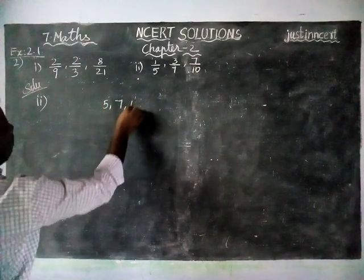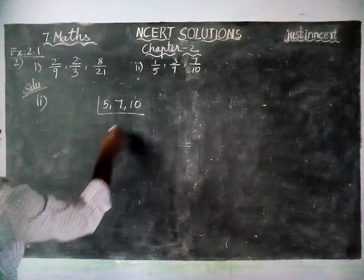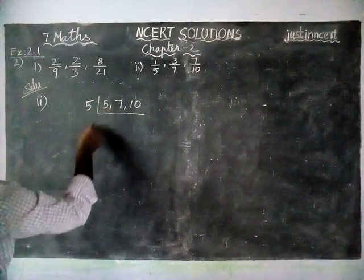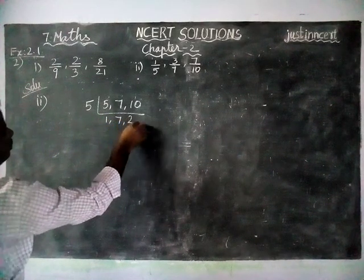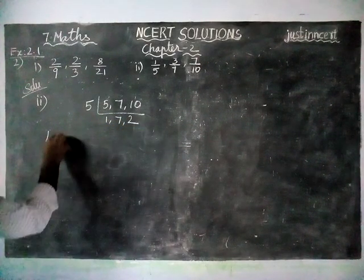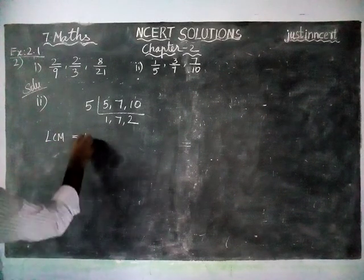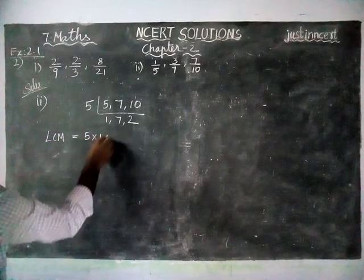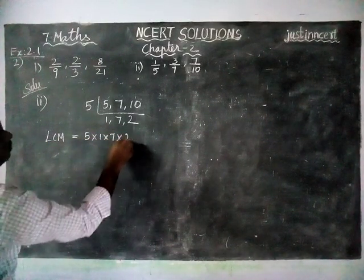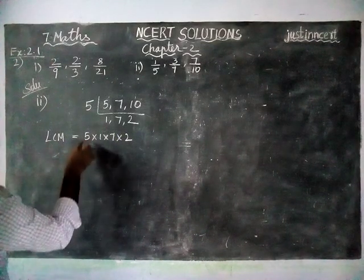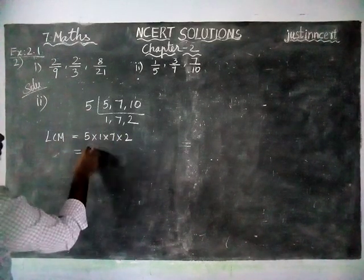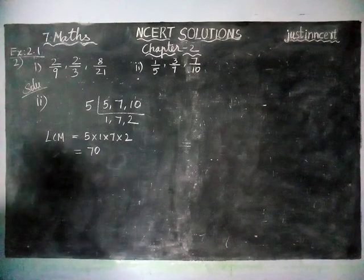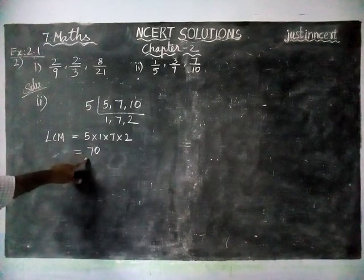5, 7, 10. We can divide it by 5. When we are dividing by 5, we get 1, 7, 2. Now we have to multiply. LCM equals 5 into 1 into 7 into 2, equals 5 times 7 is 35, 35 times 2 is 70. Now we got LCM equals 70.